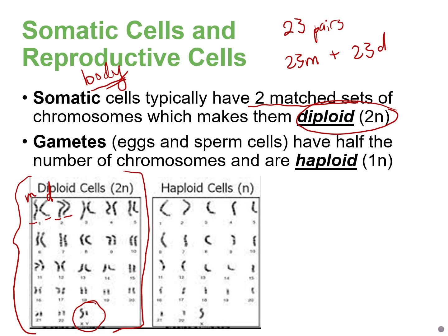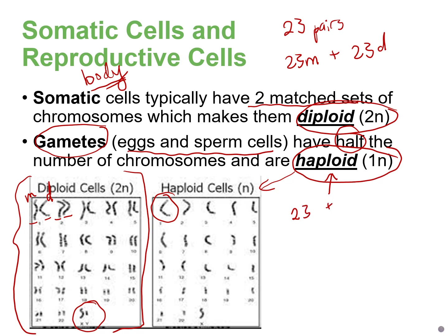When humans are making gametes — sperm and egg — these cells will actually have half the number of chromosomes and they're going to be haploid. We're going to learn more about this in a later chapter when we talk about meiosis. Gametes, these sperm and egg cells, are haploid — that pair is missing, you only have one or the other instead of the pair. This is important because during fertilization of the egg by the sperm, the egg has 23 chromosomes, the sperm has 23 chromosomes, and you regenerate the normal number of chromosomes in the future baby.